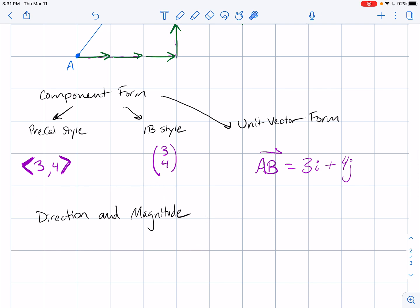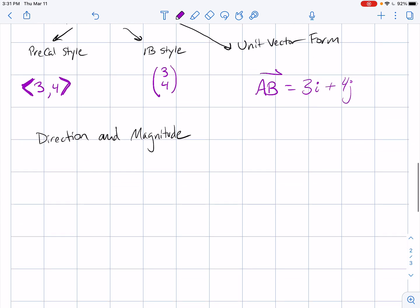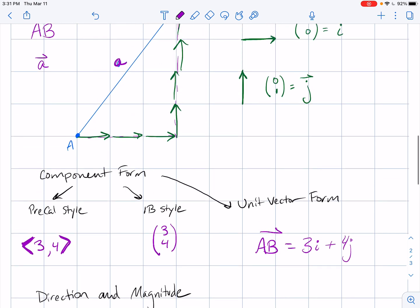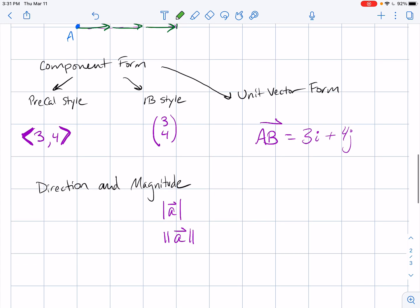We'd see direction and magnitude more in precal, but let me talk about it real fast. What's the magnitude of this vector? The notation for magnitude in IB will be one line, and precal puts two lines. That tells us how long is that vector. Notice in this particular problem you've got a three four, and so therefore this is a five, a 3-4-5 triangle. So the magnitude of vector A would be equal to five.